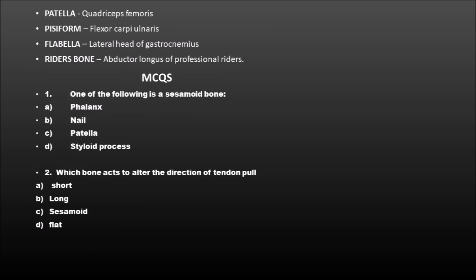Patella is in the tendon of quadriceps femoris. Pisiform is in the tendon of flexor carpi ulnaris. Fabella is in the tendon of the lateral head of gastrocnemius, and rider's bone is in the tendon of adductor longus, which is present in professional riders. These two are the most important MCQs which are repeated often. Which one of the following is a sesamoid bone? The correct answer is option C.